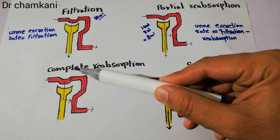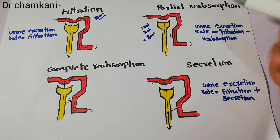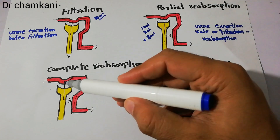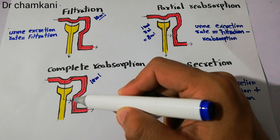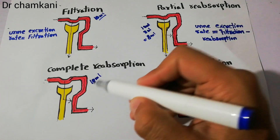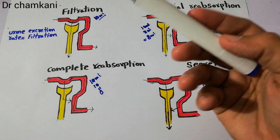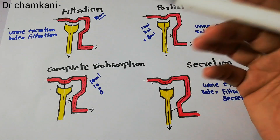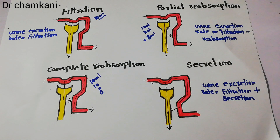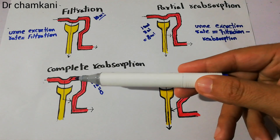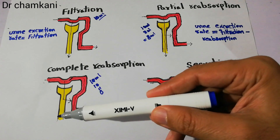If a substance is filtered and completely reabsorbed, its excretion rate will be almost zero. The equation is still: urine excretion rate equals filtration minus reabsorption. If 10 ml is filtered and 10 ml is reabsorbed, the excretion is zero. For example, substances like glucose or electrolytes such as sodium and potassium — if completely reabsorbed at the nephron level, their urine excretion rate will be zero because whatever was filtered is reabsorbed and nothing is left for excretion.